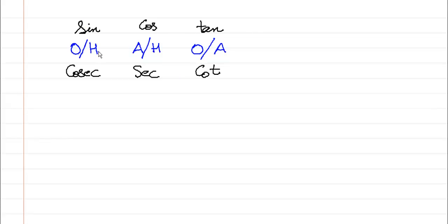So: sin theta is opposite upon hypotenuse, cos theta is adjacent upon hypotenuse, tan theta is equal to opposite upon adjacent. In the very same way, cosec theta is the reciprocal — hypotenuse upon opposite. Then sec theta is hypotenuse upon adjacent, and cot theta is adjacent upon opposite. Remember that sine and cosec are reciprocals, cos and sec are reciprocals, and tan and cot are reciprocals.